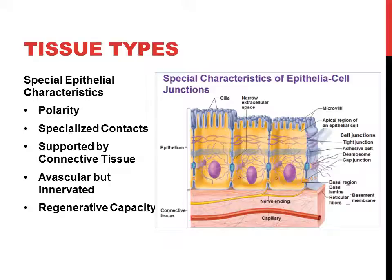All epithelial tissue is a sheet of epithelial cells that covers and lines things. It needs to be supported by something — in all cases, connective tissue. The basal lamina is secreted by the basal part of the epithelial cells and sits on connective tissue. The basal lamina and reticular fibers together form the basement membrane. Epithelial tissues sit on this basement membrane for structure and support.